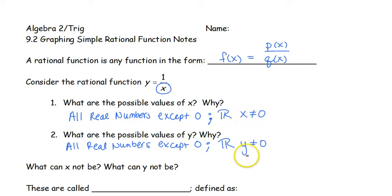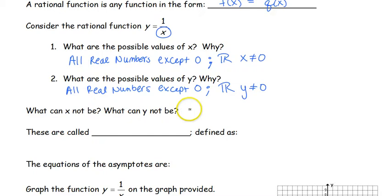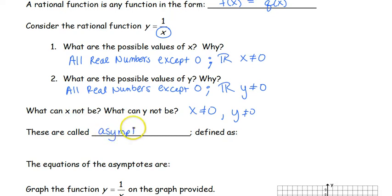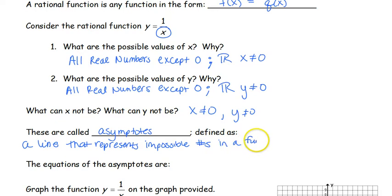You just want to make sure that you're specifying whether it's x or y. So what can x not be? X cannot be 0. Y cannot be 0. When we have these values that x and y cannot be, these are called asymptotes.